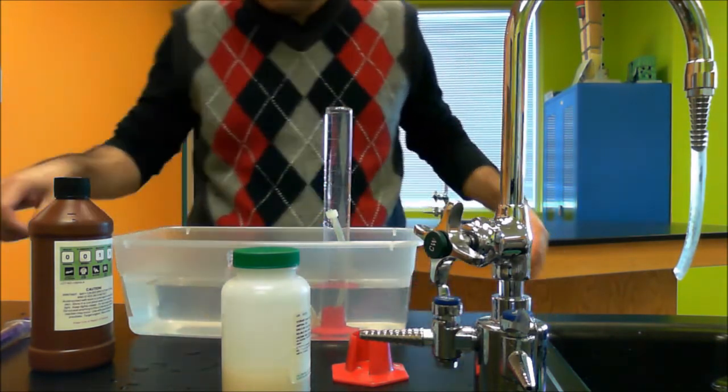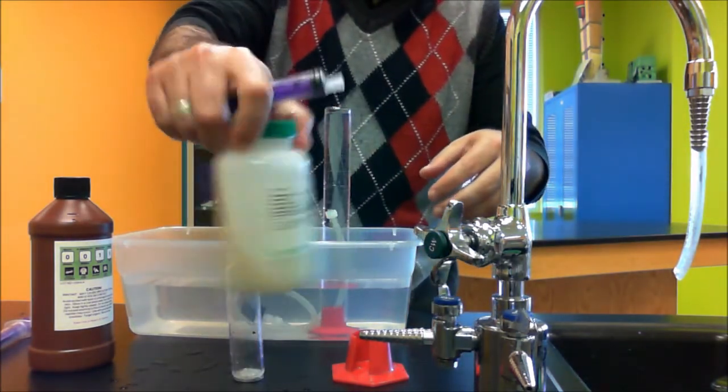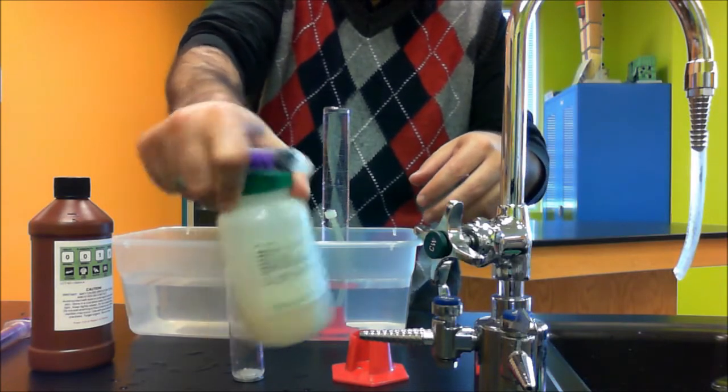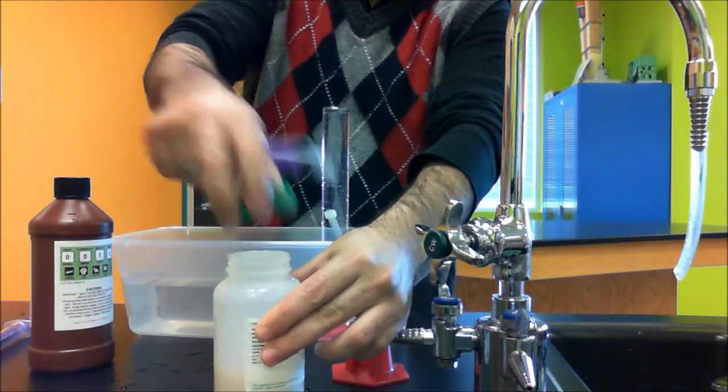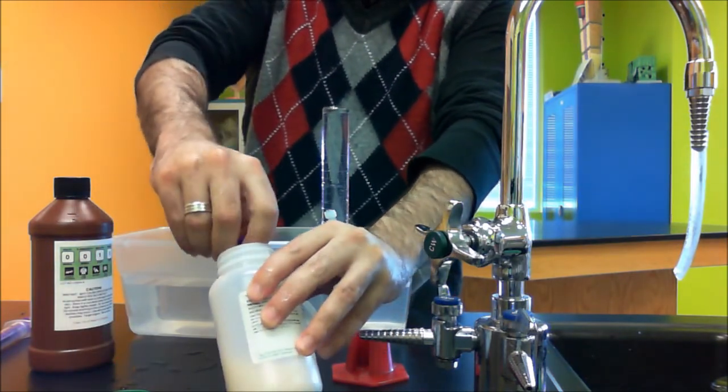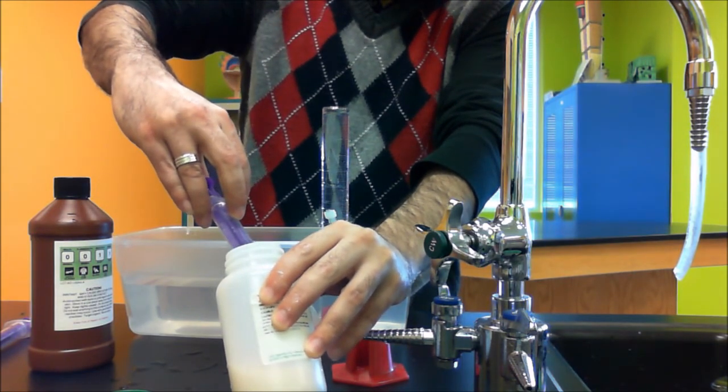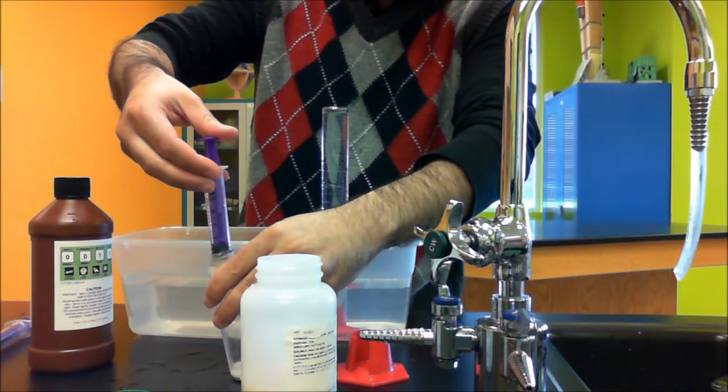Now next, you're going to use your syringe and your yeast suspension. It's important to mix it before you take your yeast sample. Take three milliliters of yeast suspension and add it into your glass vial.